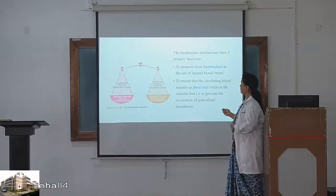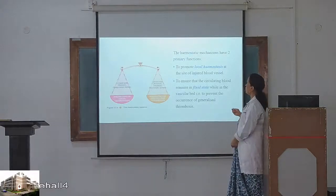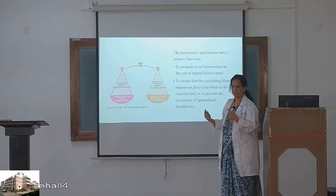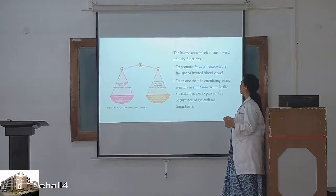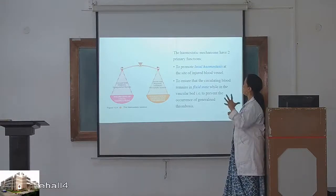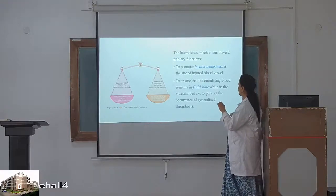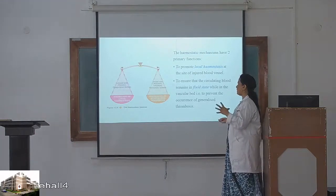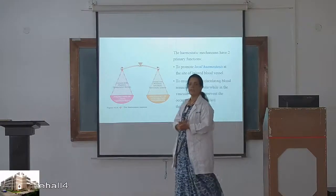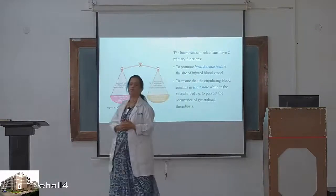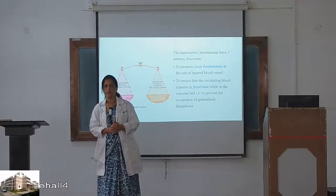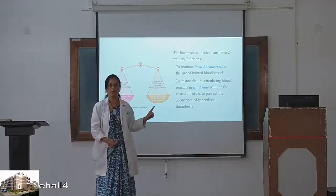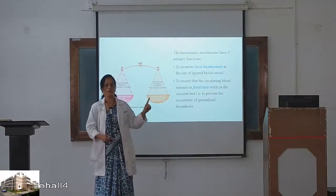The hemostatic mechanisms have two primary functions: to promote local hemostasis at the site of injured vessels, and to ensure that the circulating blood remains in a fluid state while in the vascular bed — that is, to prevent the occurrence of thrombosis. Normally, when blood is circulating in the blood vessels, it does not clot. If it clots, that is abnormal and leads to thrombosis.